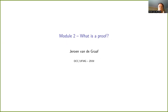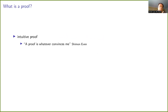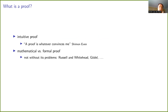Welcome to the second module of our course on CK-SNARKs. The topic of this module will be: what is a proof? The notion of a proof is interesting but also somewhat confusing. Oded Goldreich, in one of his books, says a proof is whatever convinces me — one of his professors taught him this. This is interesting and it's often what happens, including in mathematical proofs, since many proofs in scientific papers aren't really that formal.